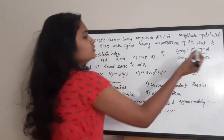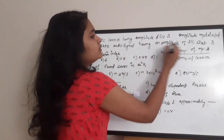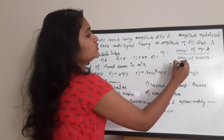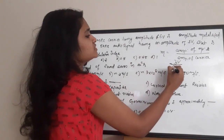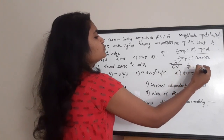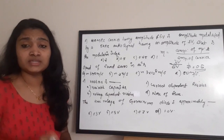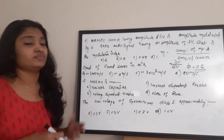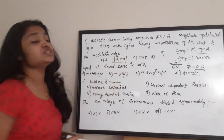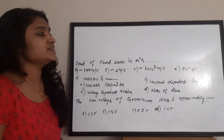The amplitude of the modulating signal is 3 volts and the amplitude of the carrier is 6 volts. So M = 3/6 = 1/2 = 0.5. The modulation index of this AM wave is 0.5, so the correct answer is option B.